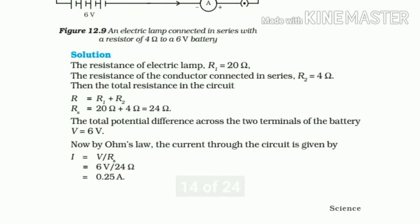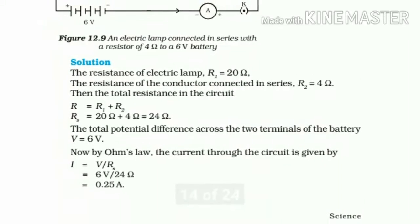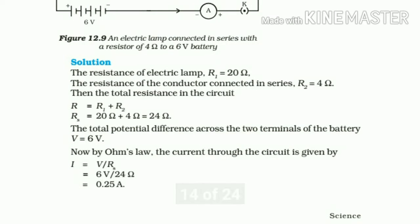First we have the lamp resistance, 20 ohm. Conductor is 4 ohm. Both resistances are in series. Their algebraic sum gives the total. R1 plus R2, 20 plus 4 equals 24 ohm.